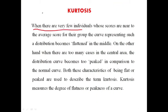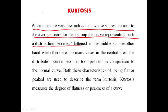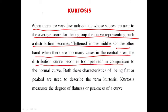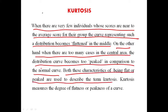When there are very few individuals whose scores are near to the average score for the group, the curve representing such a distribution becomes flattened in the middle. On the other hand, when there are too many cases in the central area, the distribution curve becomes too peaked in comparison to the normal curve. Both these characteristics of being flat or peaked are used to describe the term kurtosis. Kurtosis measures the degree of flatness or peakedness of a curve.